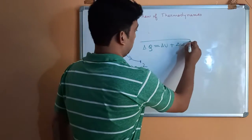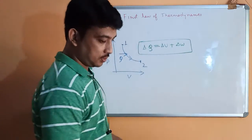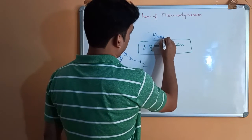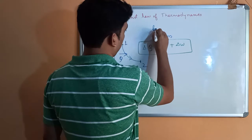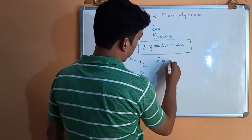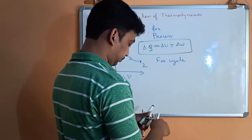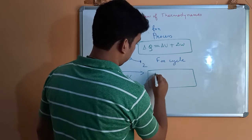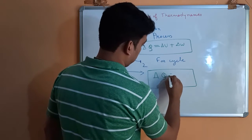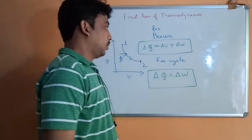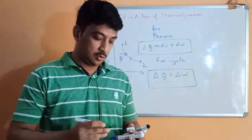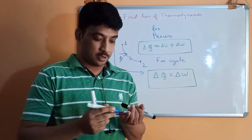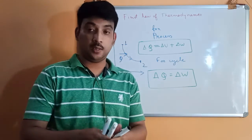So this is the statement of the first law for a process: DQ = DU + DW. And for a cycle: ΔQ = ΔW. So next time whenever your professor asks you about the first law of thermodynamics, don't say that energy cannot be created or destroyed.